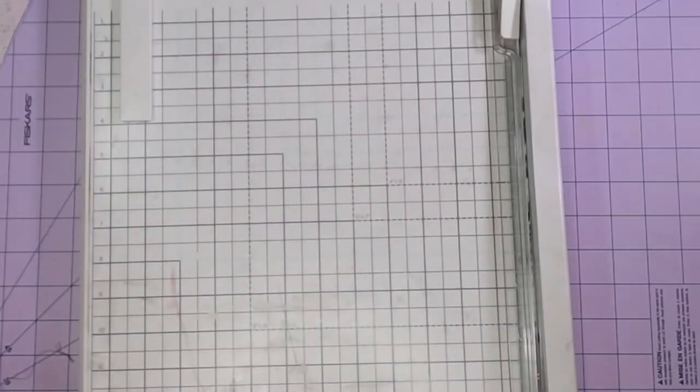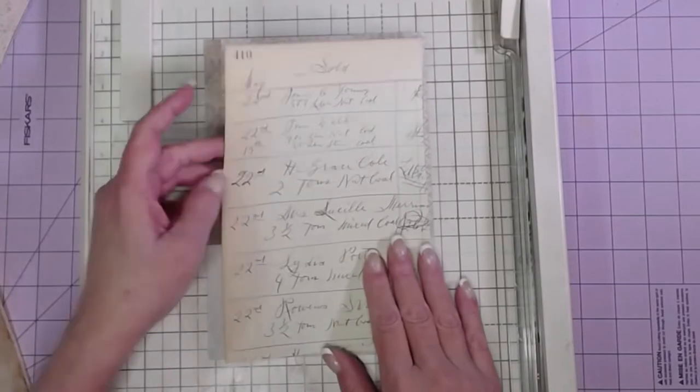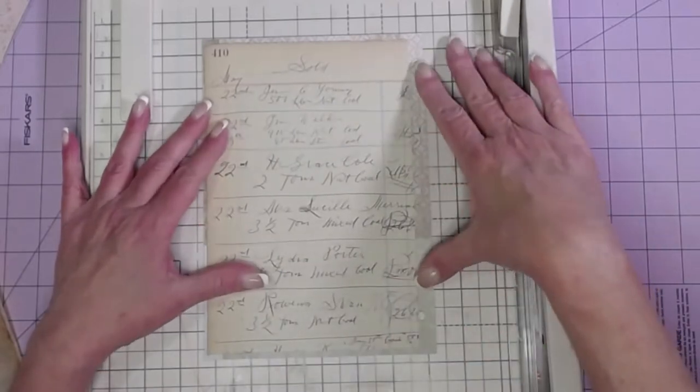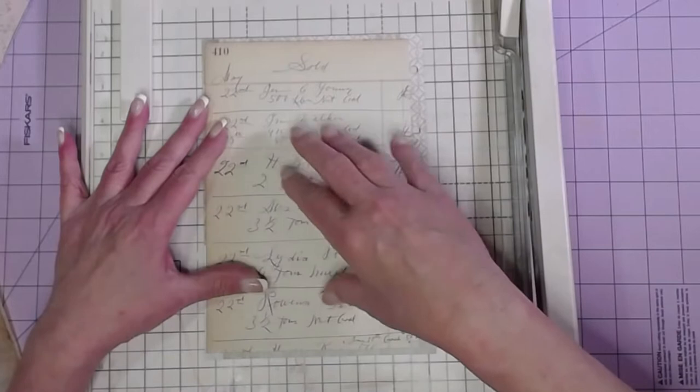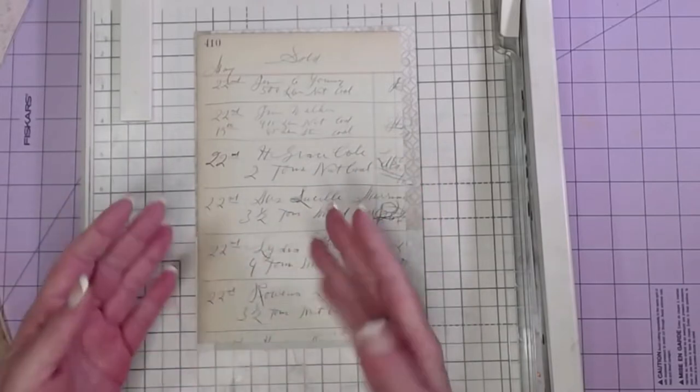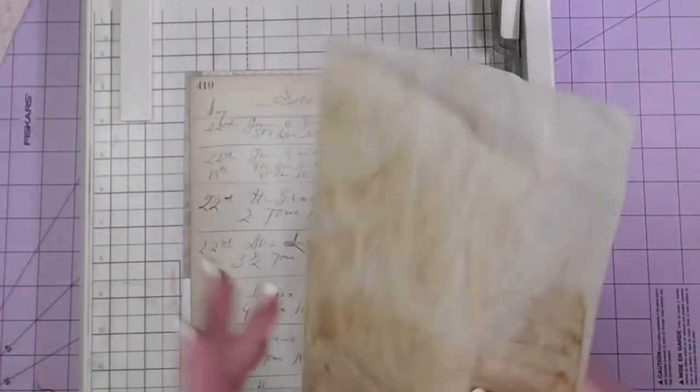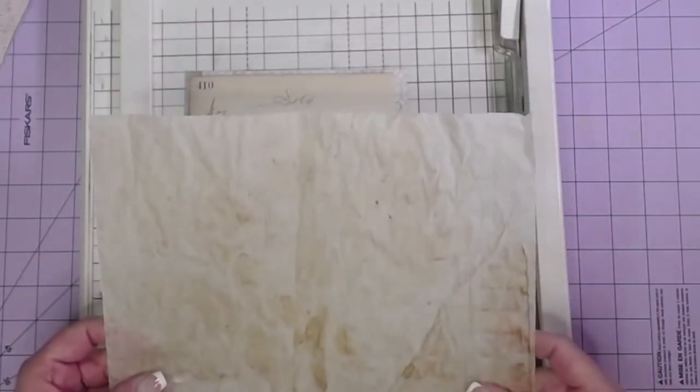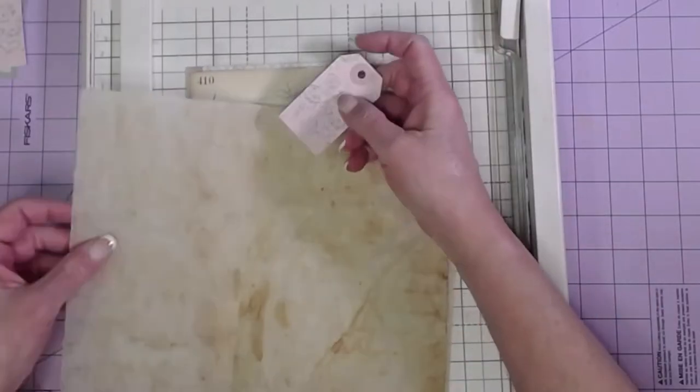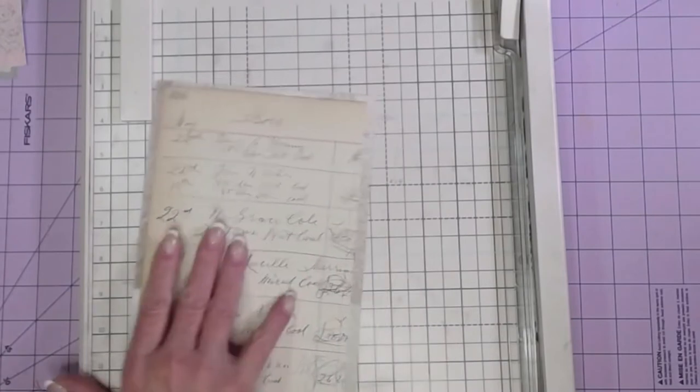What I did was just took my idea book page out and then took a piece of old ledger paper and cut it down to be pretty close to the right size. You certainly don't have to do this part. I'm not going to give you measurements because it's going to depend on your own idea book or what size page you're working on. I want my pocket to be about an inch and a half tall because my tags are just under three inches.